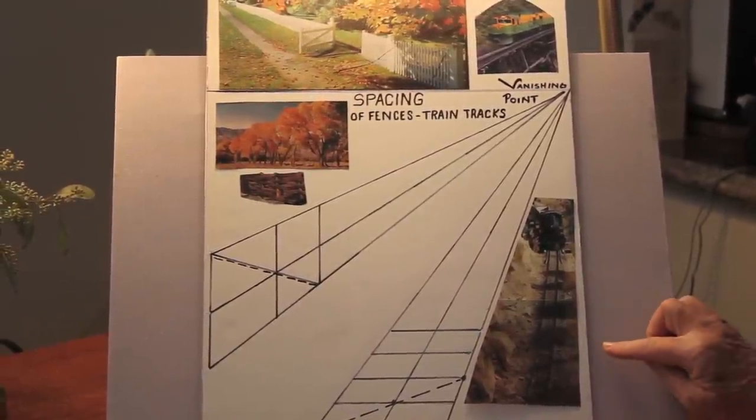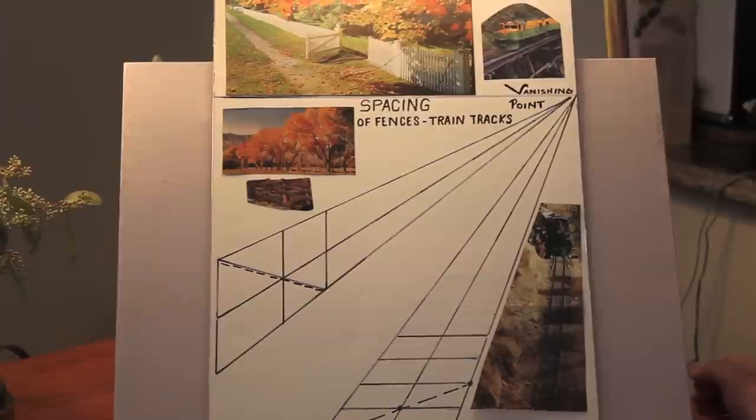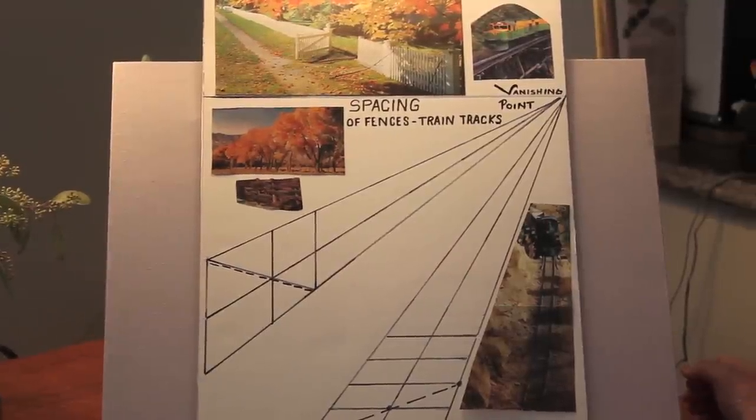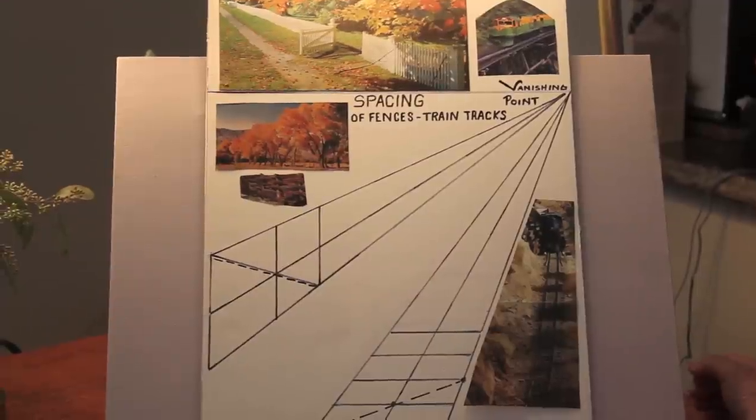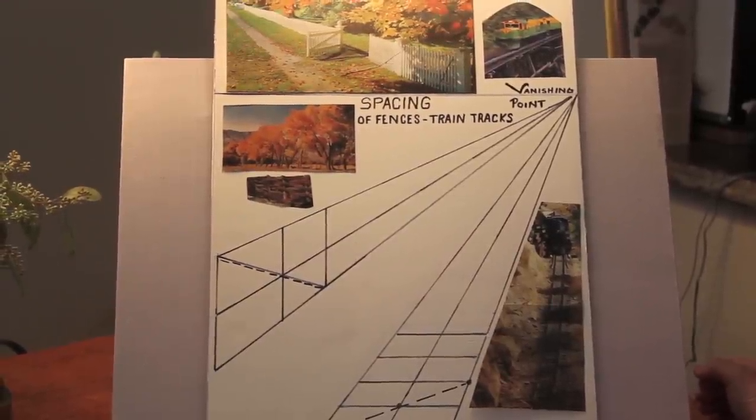The final one here is the railroad track, and the rails appear to get closer as they go into the distance. So that's what we're going to learn.